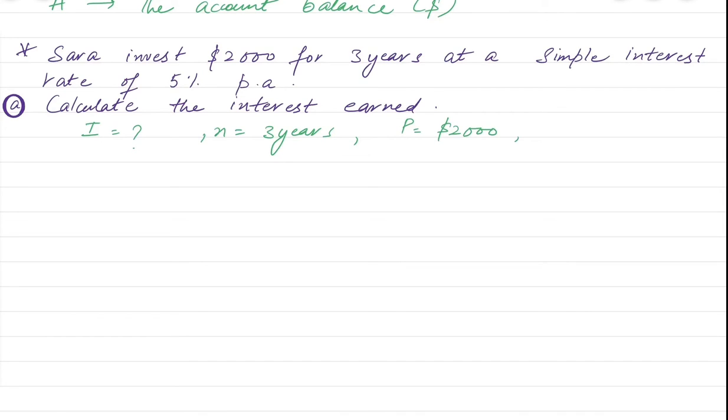P, the principal amount, $2,000 given to us. And interest rate, which is 5% per annum given to us. Now change this percentage into years, that will be 5 divided by 100, which is equal to 0.05. Now use the formula I is equal to PIN, as we know that.